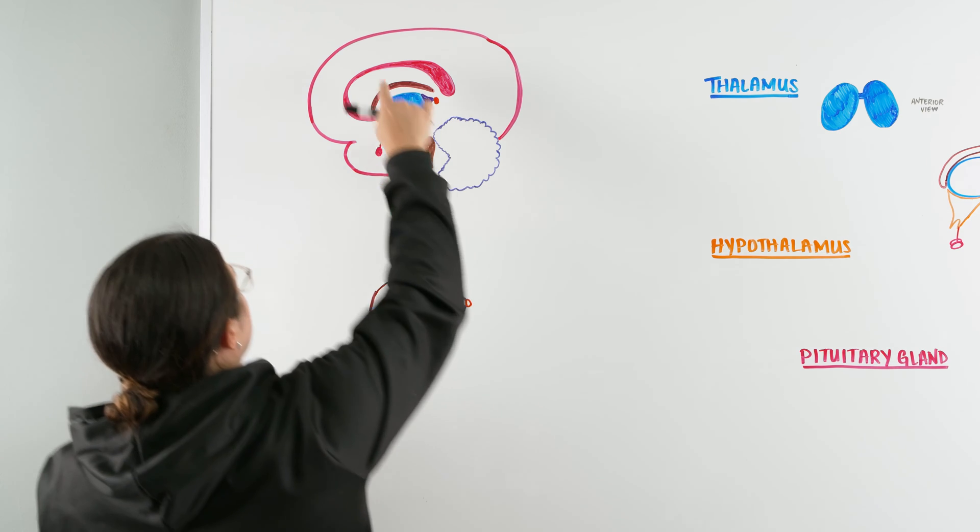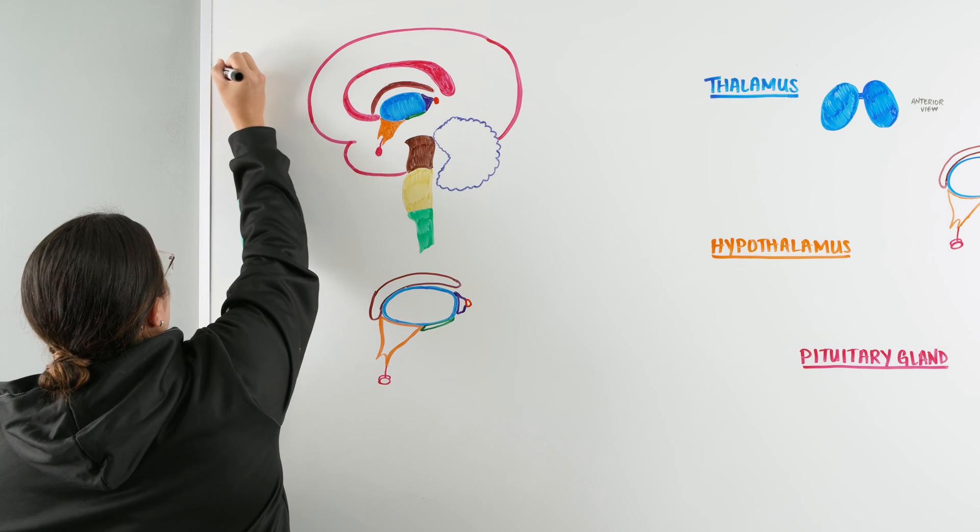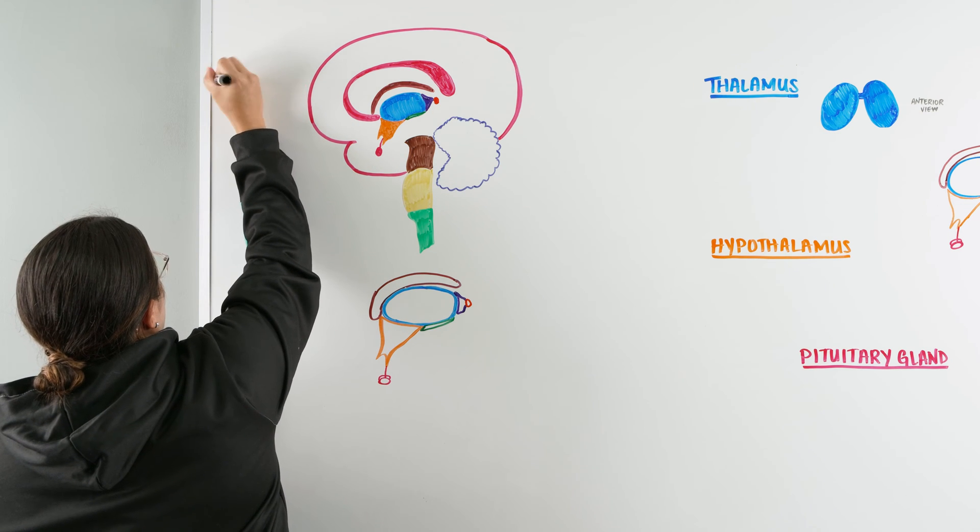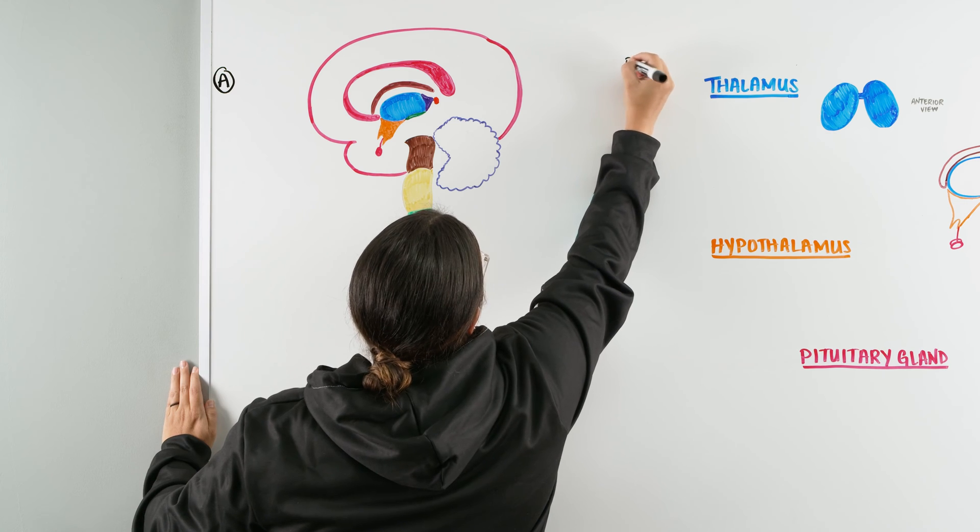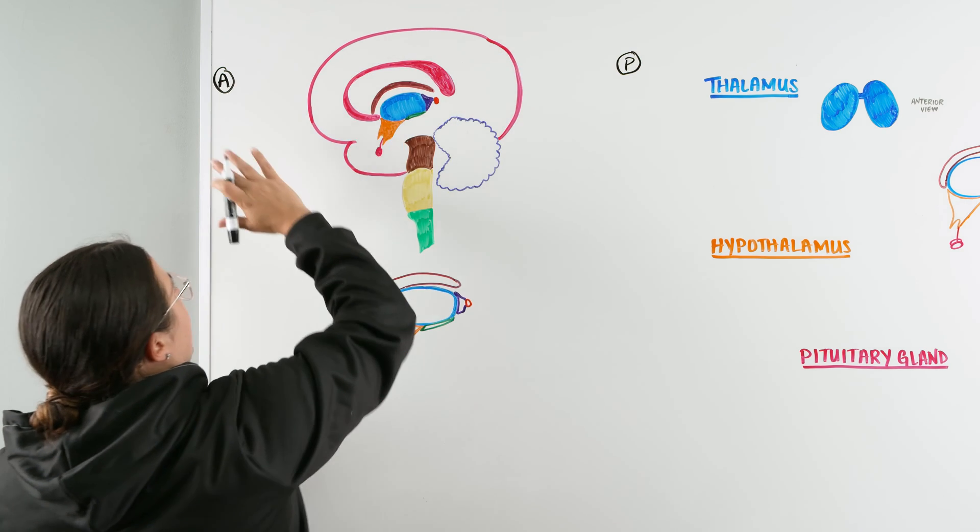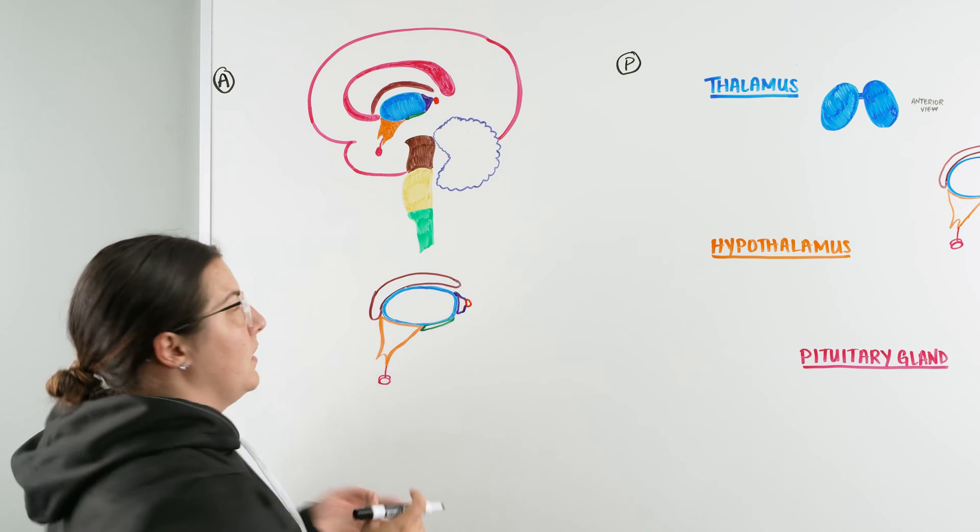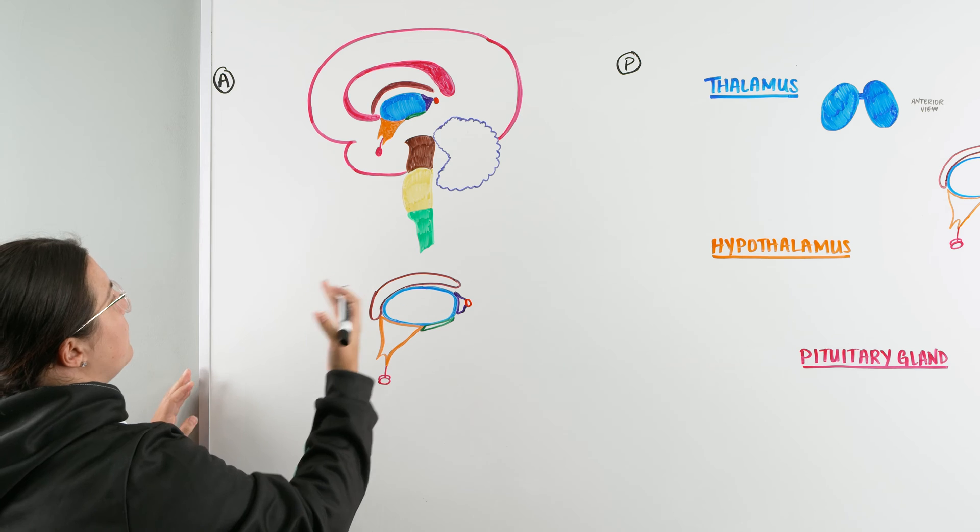But anyways, let's orient ourselves on this and then we're going to talk about the function of each part of the diencephalon. So first, right here we are looking at this whole diagram and we have our anterior portion here, our posterior portion here, and then we have our brain cut in half so we can kind of see the middle here, we can see what's going on with the brain stem and the diencephalon. So let's orient ourselves even further.